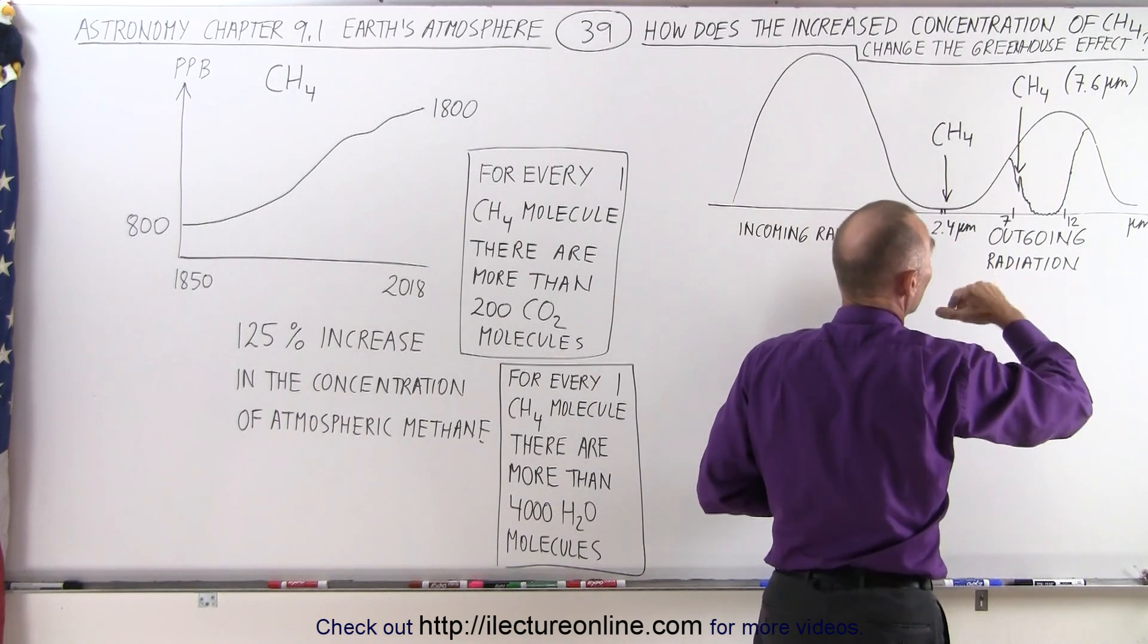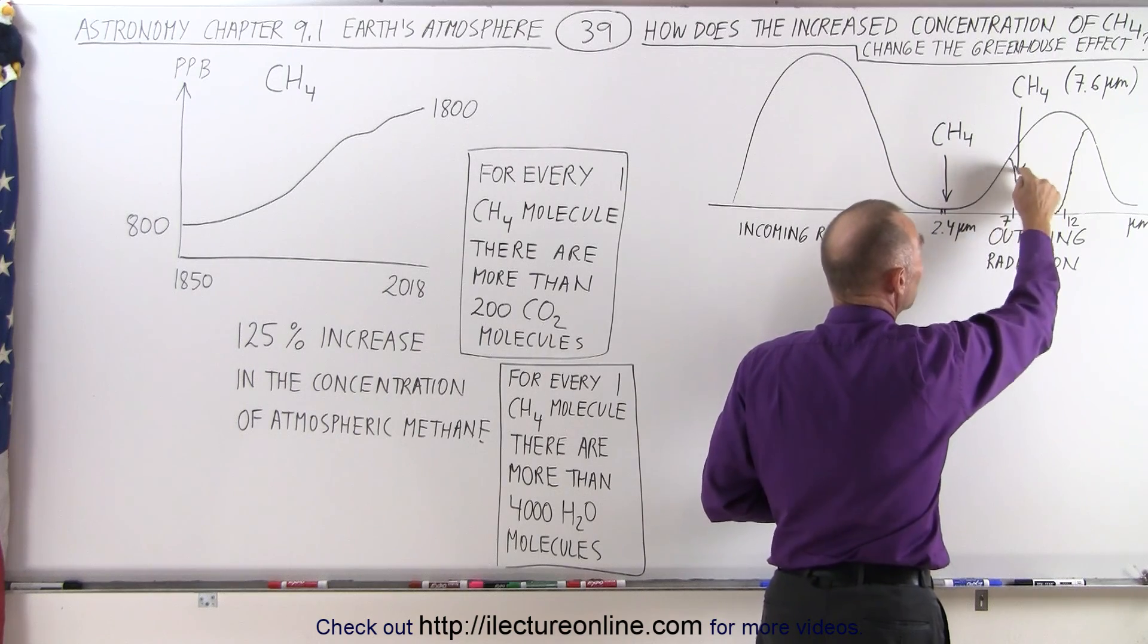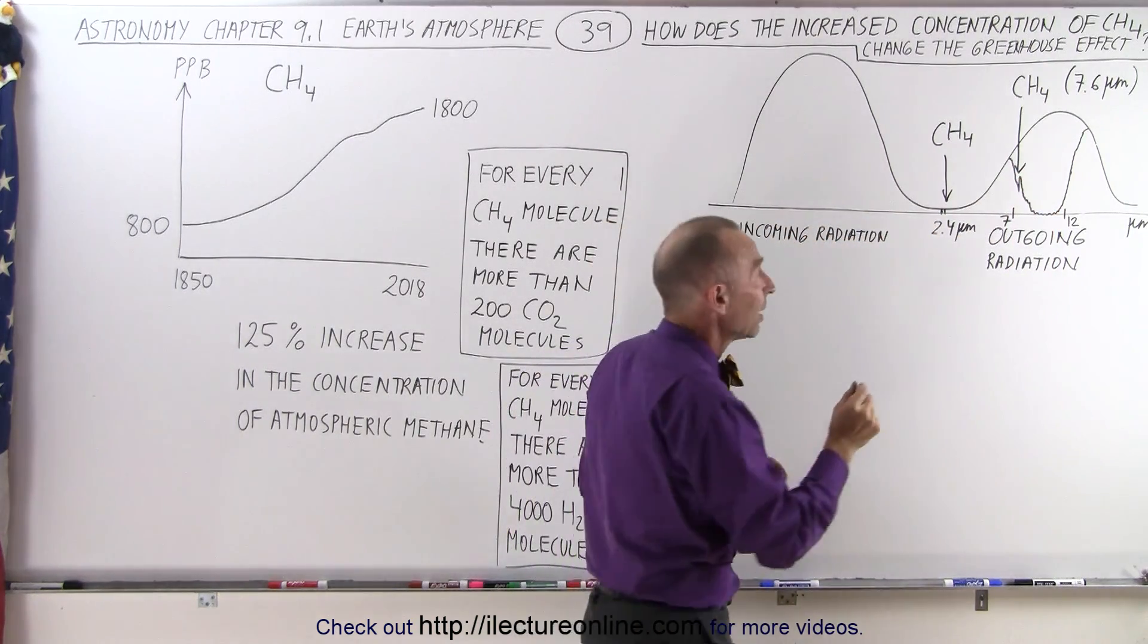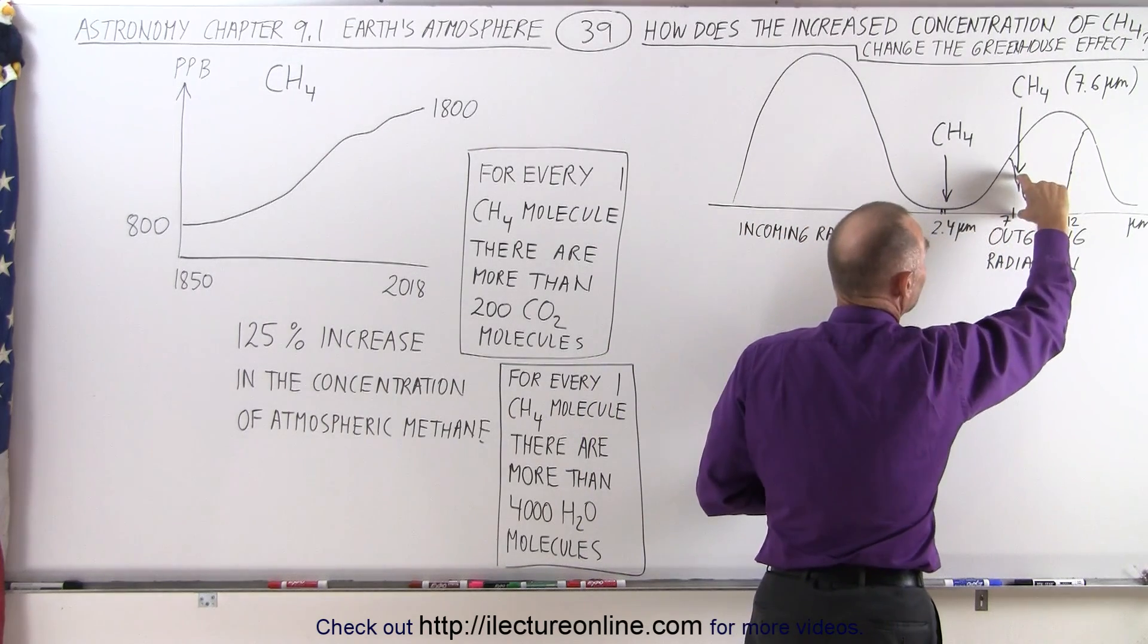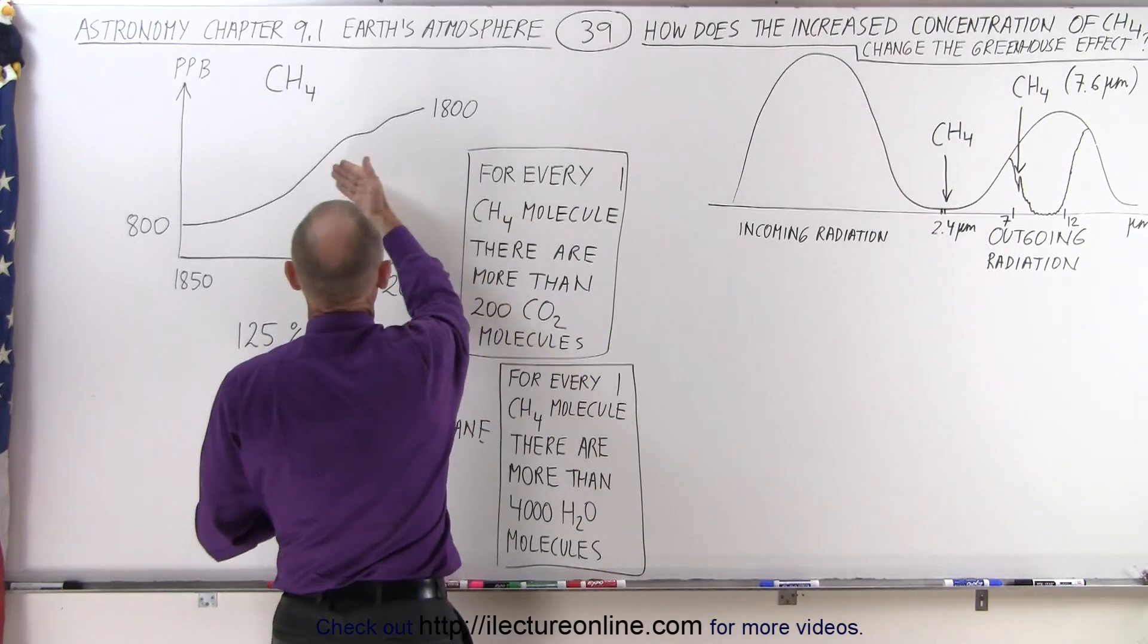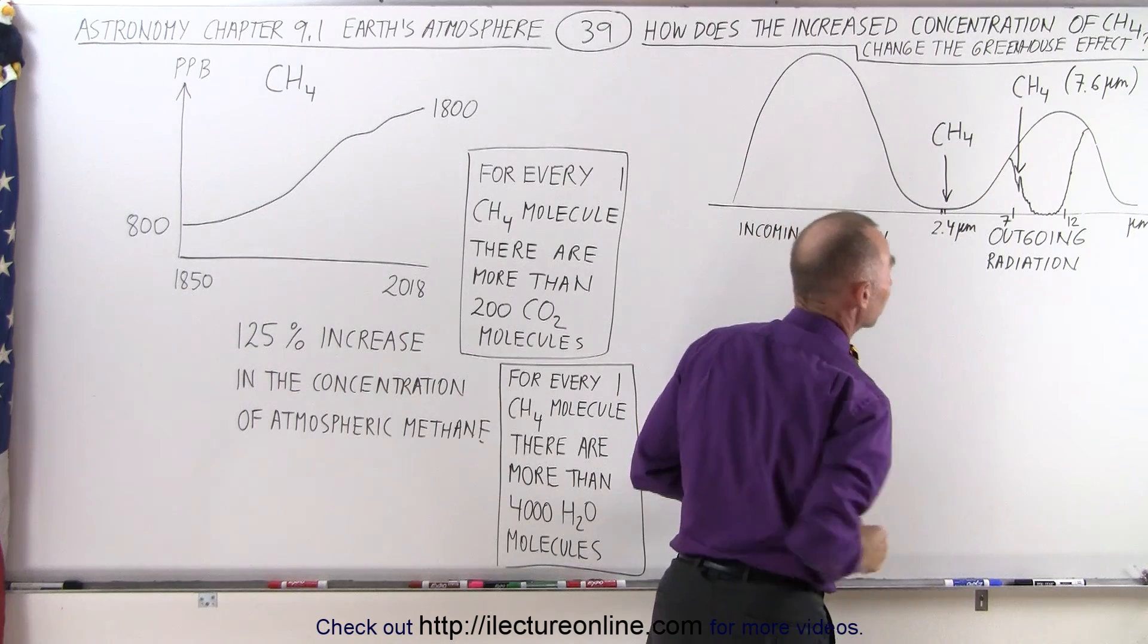That's what this blank portion is right here. So by increasing the methane concentration, you would think that this peak right here would become greater and more radiation would be held back. But it's a very narrow band in this region right here. So it doesn't appear that the current concentration of methane are doing a lot as far as holding back the radiation from the Earth.